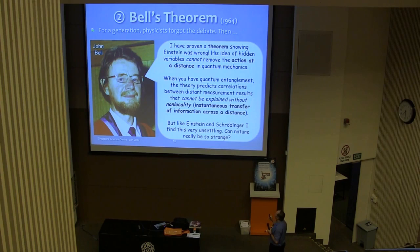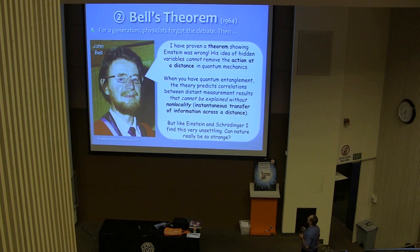So to be specific, what he proved was that when you have quantum entanglement, the theory predicts correlations between distant measurement results that cannot be explained without non-locality. So crucial word cannot be explained, so we're talking about explaining these correlations, and non-locality in the sense of instantaneous transfer of information across a distance. So if you want to explain where measurement results come from, if you want to have these hidden variables that do that, then you can't get away from having this instantaneous transfer of information.